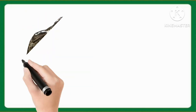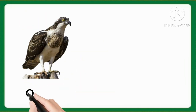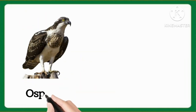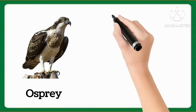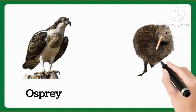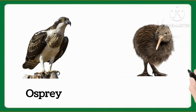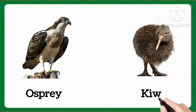And tell me which word is this, kids? This is osprey. Osprey. And now tell me which word is this, kids? This is kiwi. Kiwi.